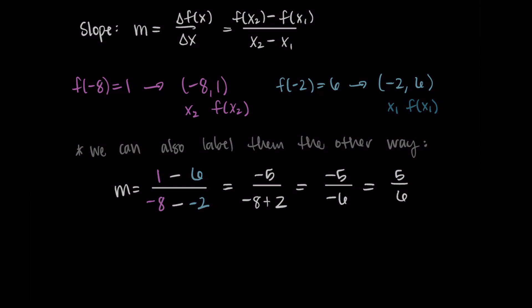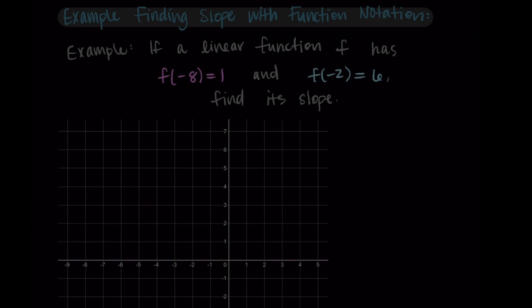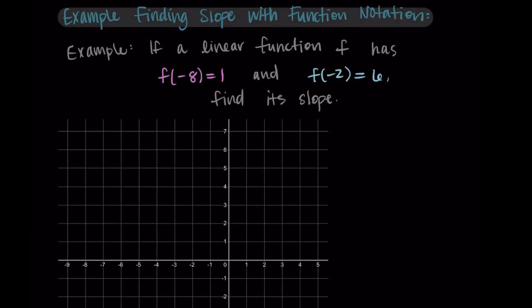So real quick, let's just graph this before we end the video. So first, let's plot our two points. I have (-8, 1) and (-2, 6). And our line goes through these two points.